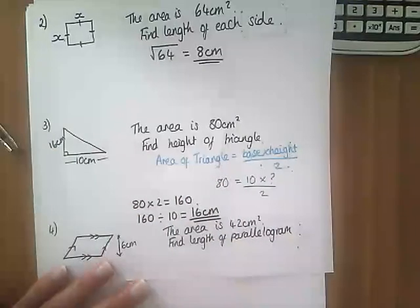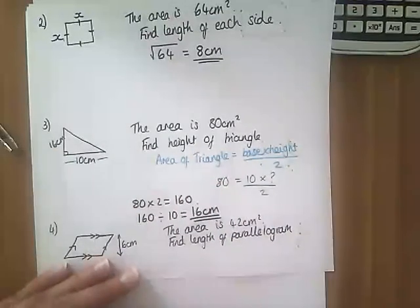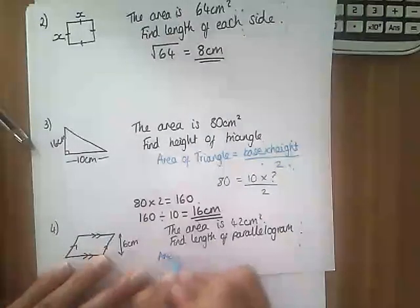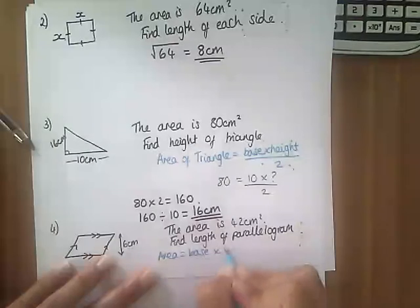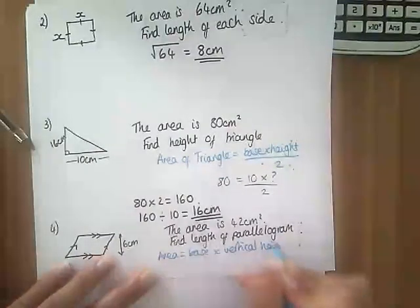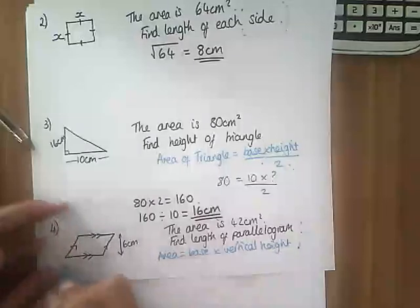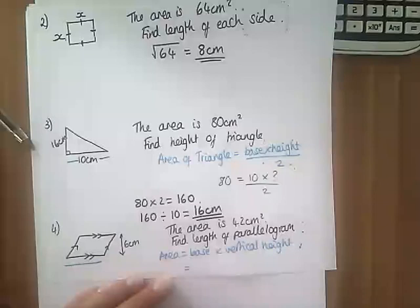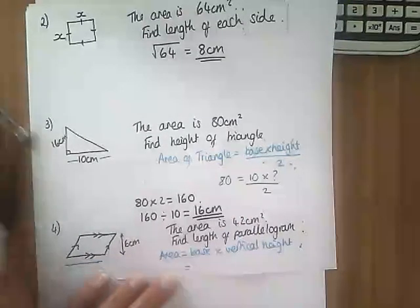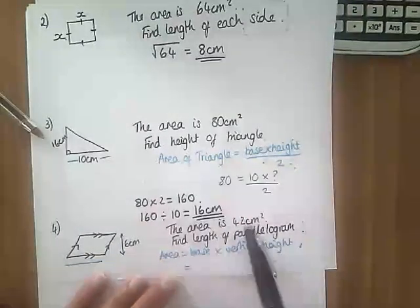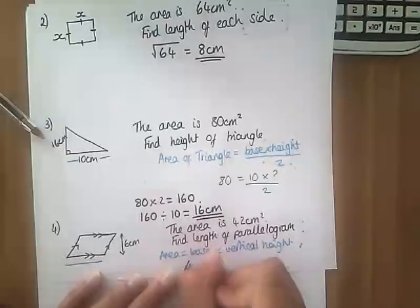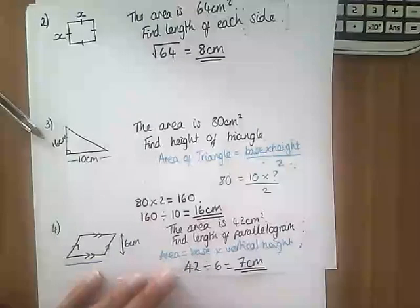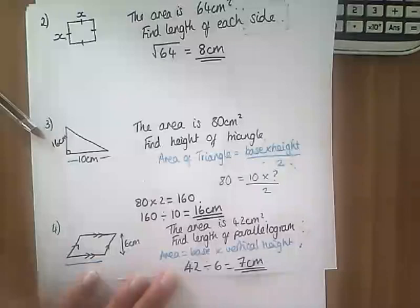Area of a parallelogram - this is a parallelogram. The area of a parallelogram is the base times the vertical height. This is what I mean by the base and that is the vertical height. We've been told the area is 42, so to get what the base is I'm going to do 42 divided by the vertical height, which is 42 divided by 6 which makes 7. That is reverse area and perimeter of these basic shapes.